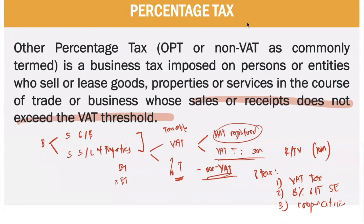Percentage tax is likened to a final tax. You just need to identify a particular type of receipt or income, and then you have a tax rate. So you look into the income, and you multiply it by your tax rate.